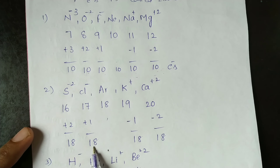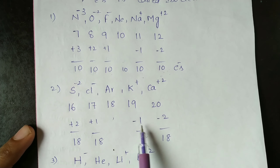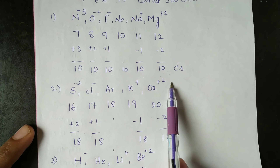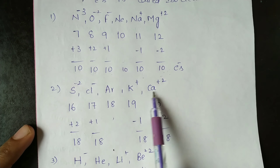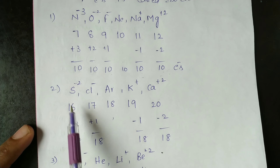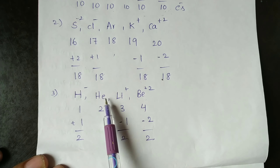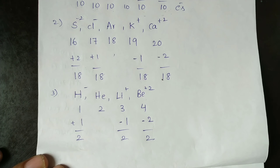S²⁻ means sulfur gains 2 electrons: 16 plus 2 equals 18 total electrons. Cl⁻ means chlorine gains 1 electron: 17 plus 1 equals 18 total electrons. Argon is 18. Ca²⁺: plus means loss of electrons. Calcium loses 2 electrons: 20 minus 2 equals 18. So total 18 electrons. The series of atoms or ions having the same number of electrons is known as an isoelectronic series.